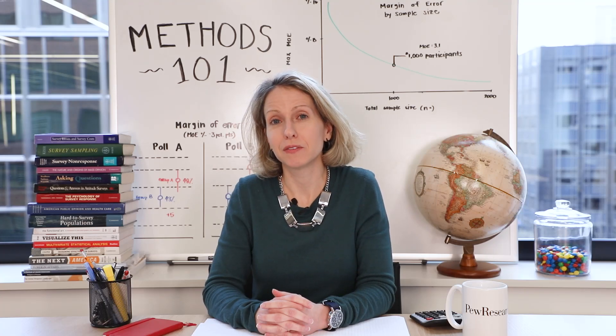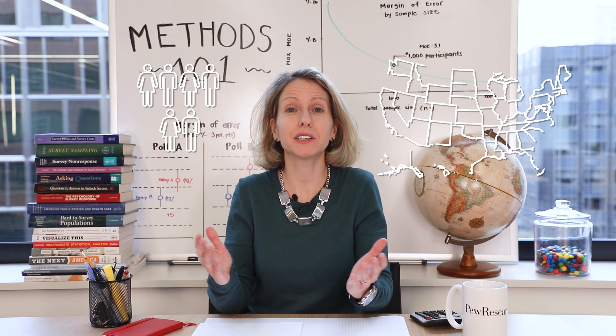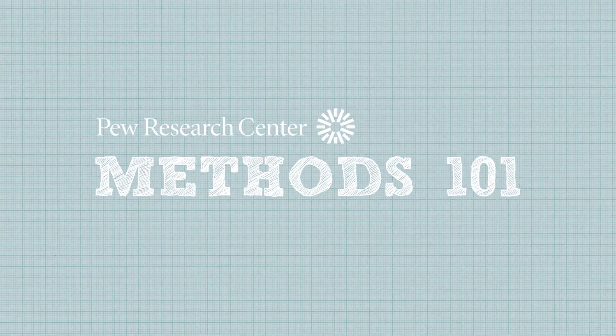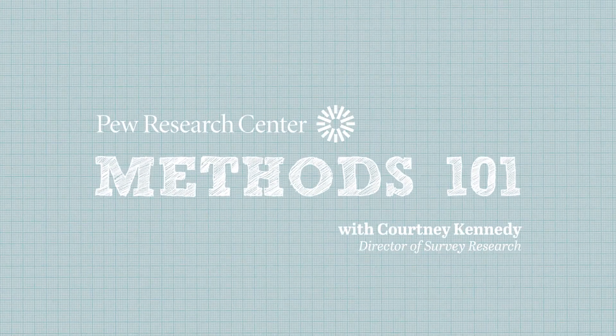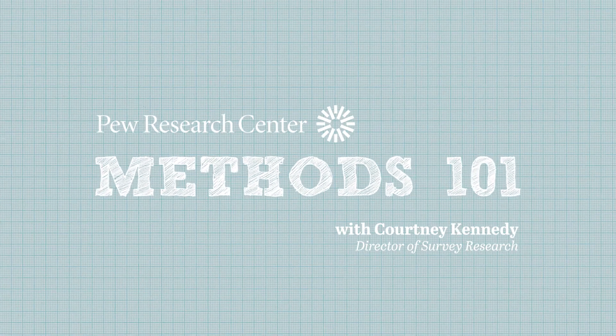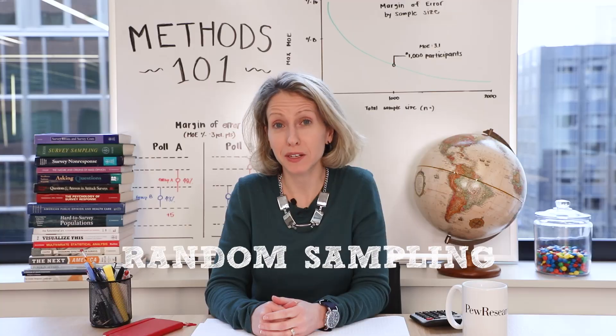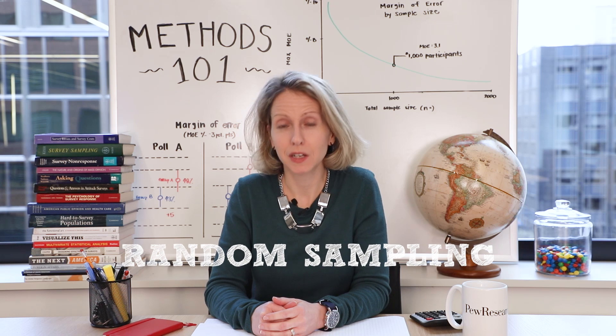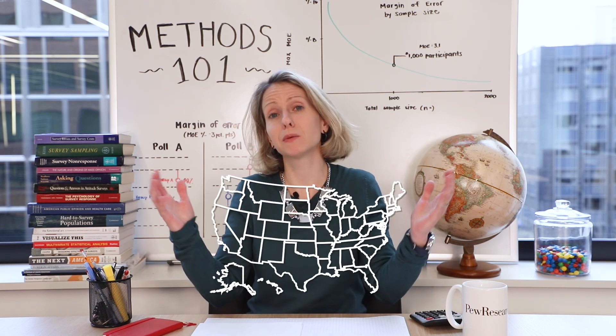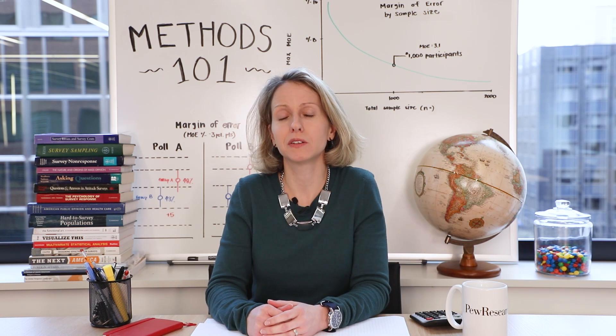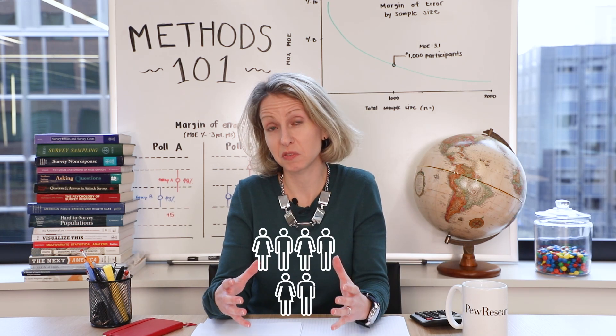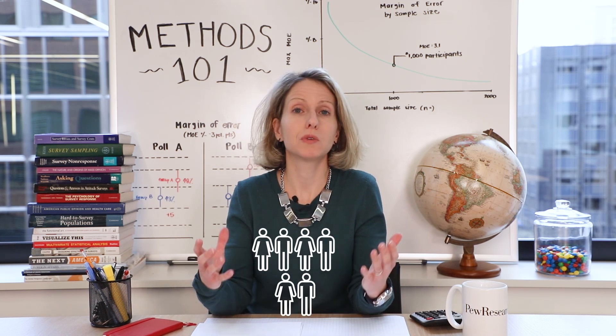So how can a survey of a small group of people measure public opinion of the entire United States? This idea is called random sampling, where instead of talking to everyone in the population, you talk to a group of people who represent the entire population.